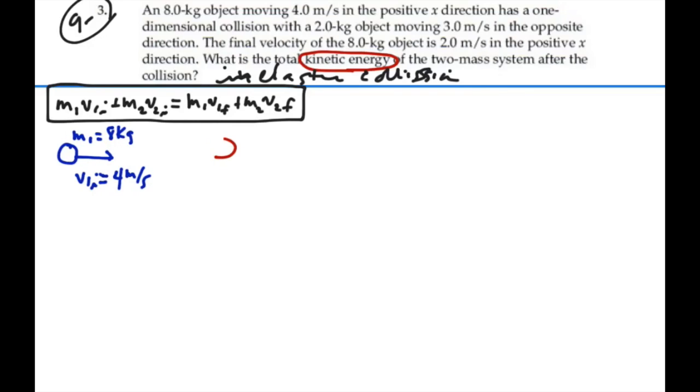We have mass 2, which is 2 kilograms, moving at 3 meters per second in the opposite direction. So V2 initial is actually a negative 3 meters per second because it's going in the negative x direction. This is the way things are looking initially.